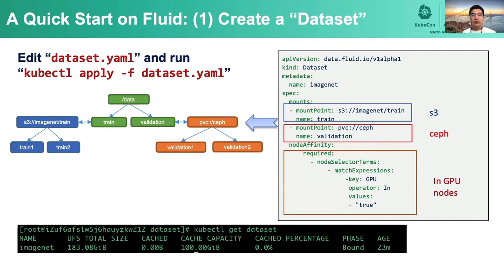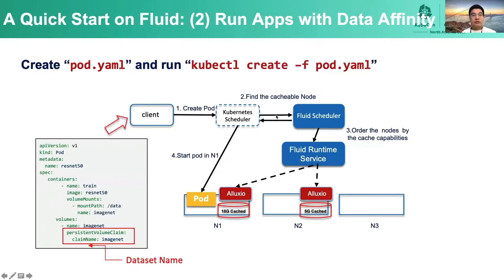The dataset can also set data sources from OSS, COS, S3, HDFS, and S3-compatible storage. All can be accelerated through distributed cache, and it can also accelerate existing PVCs. In this example, we use Alluxio as the runtime to accelerate the dataset. If you need to deploy an application that uses the dataset, you only need to specify the name of the dataset as the PVC. The scheduler will select an appropriate node based on the data cache information, preferring nodes with cache capabilities and more cached data. This is transparent to the end user.